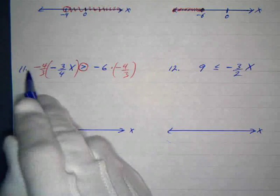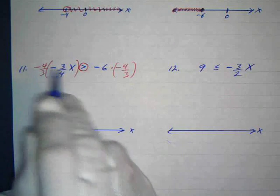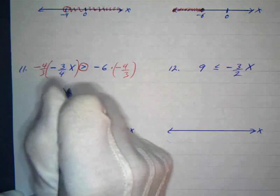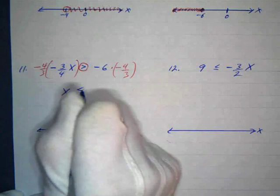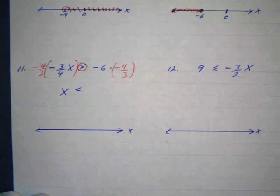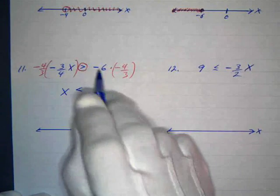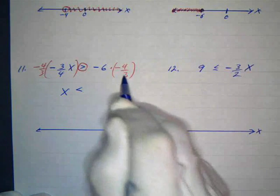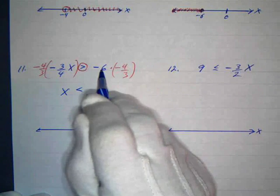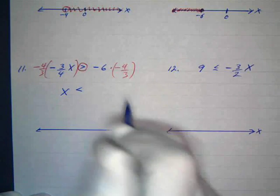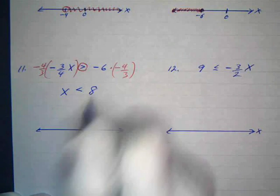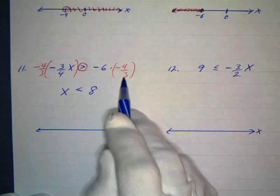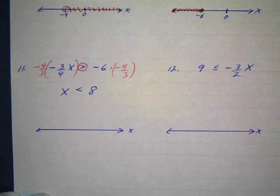A negative times a negative is a positive. 4 over 3 times 3 over 4 is 12 over 12, which is 1, so I just have x. Since I circled the inequality, I've got to reverse the direction — it was pointing to the left, so now it points to the right. A negative times a negative is a positive: 3 goes into 6 twice, and 2 times 4 is 8. So I've got x is less than 8.